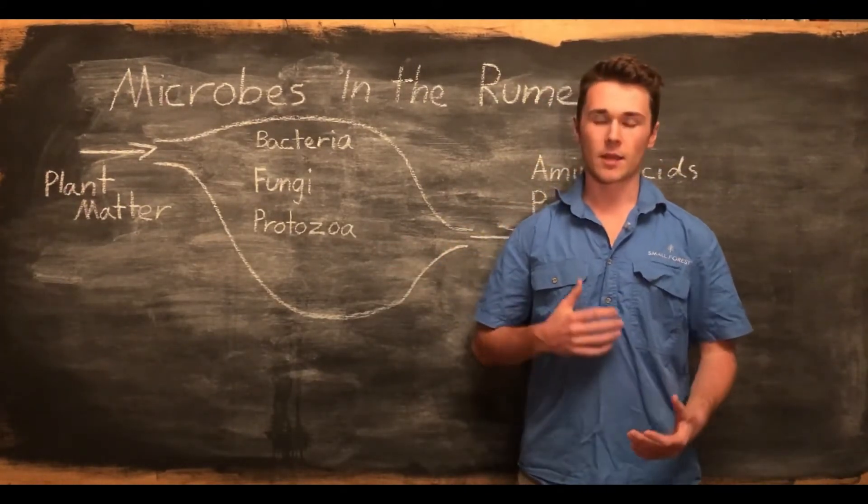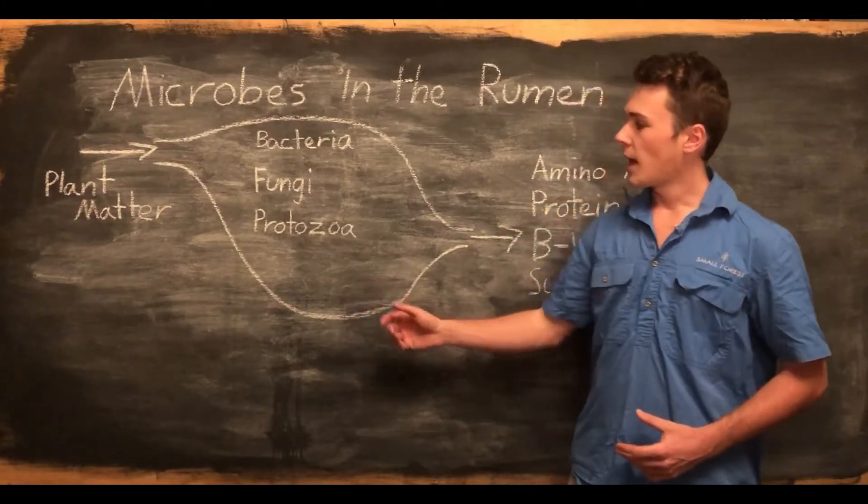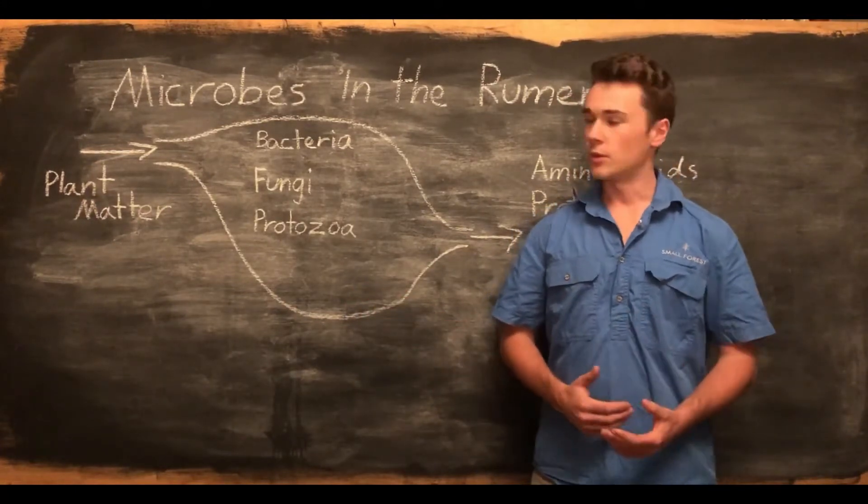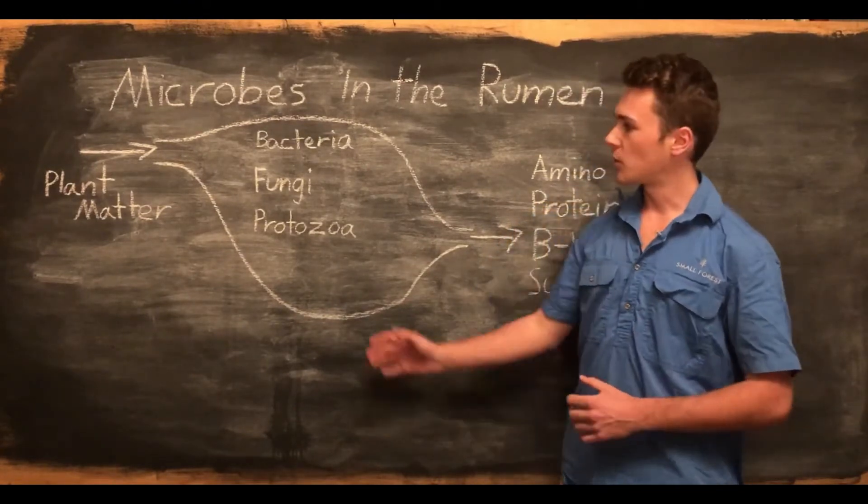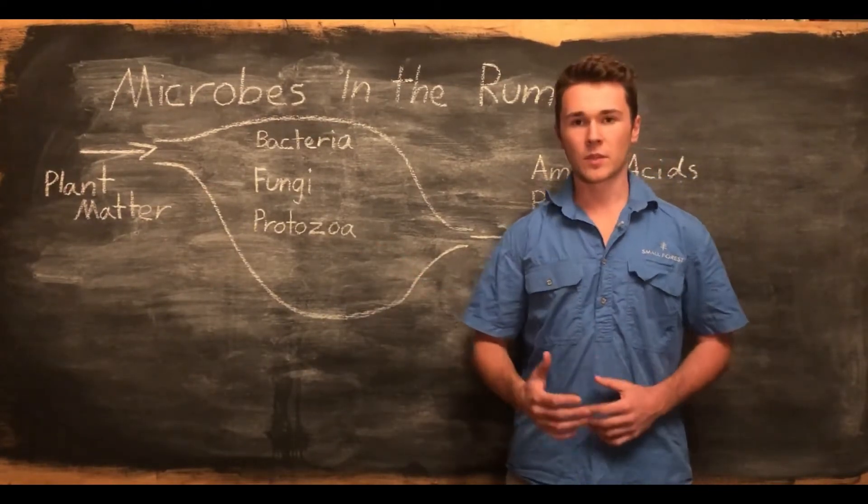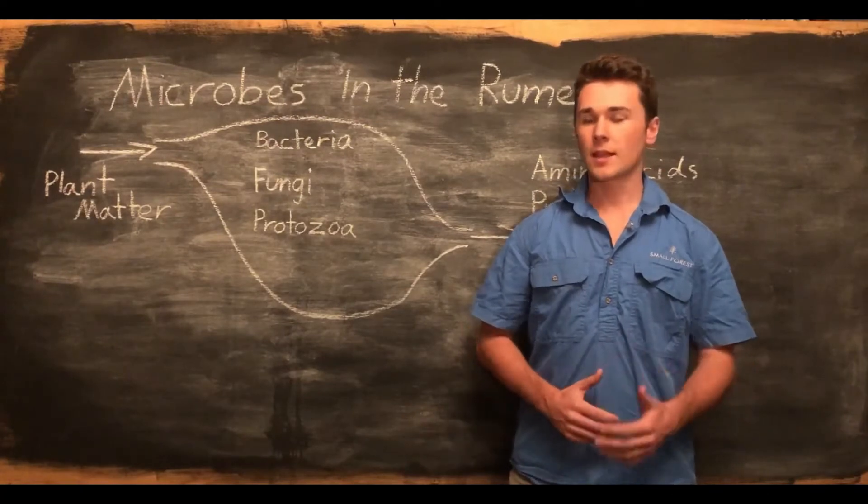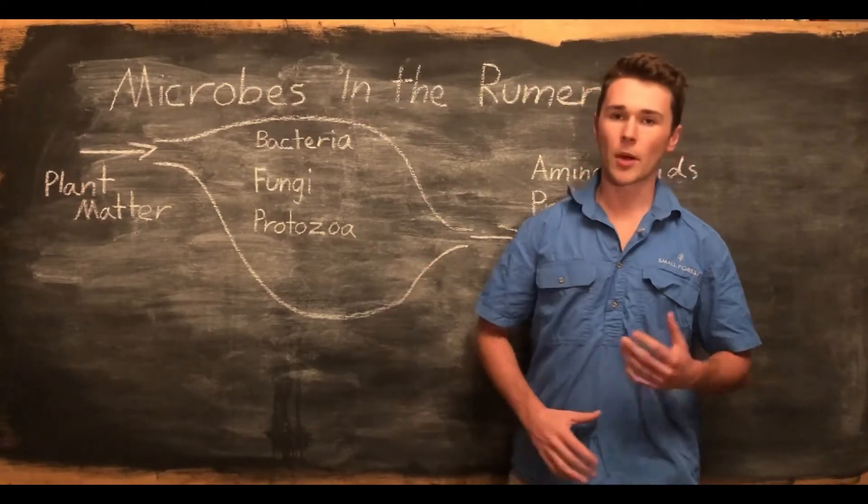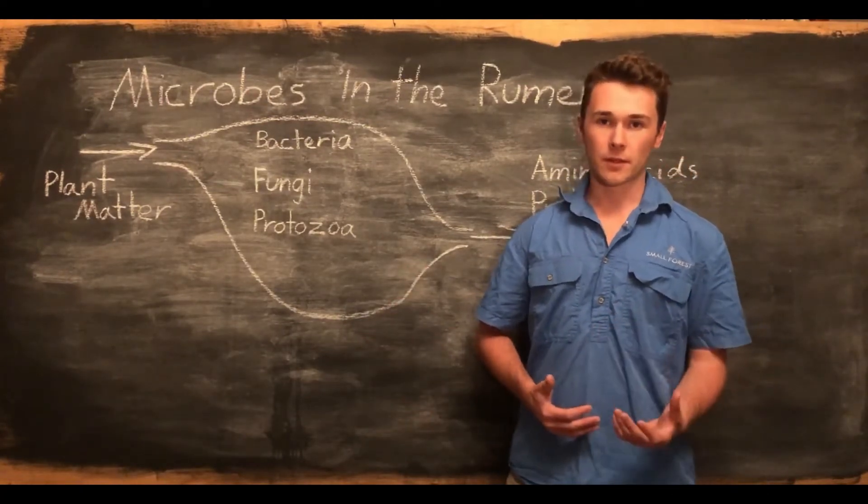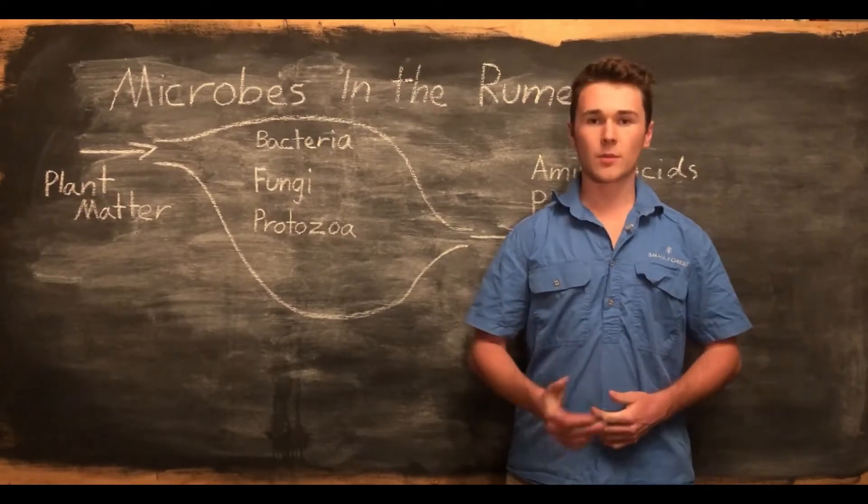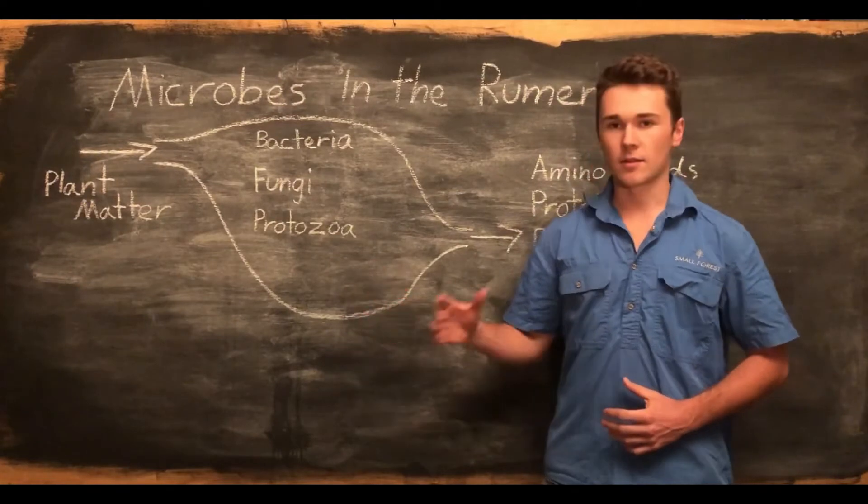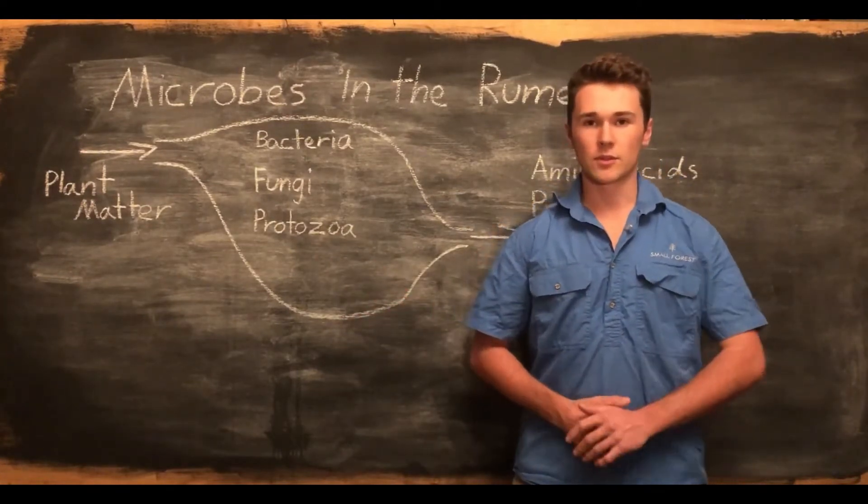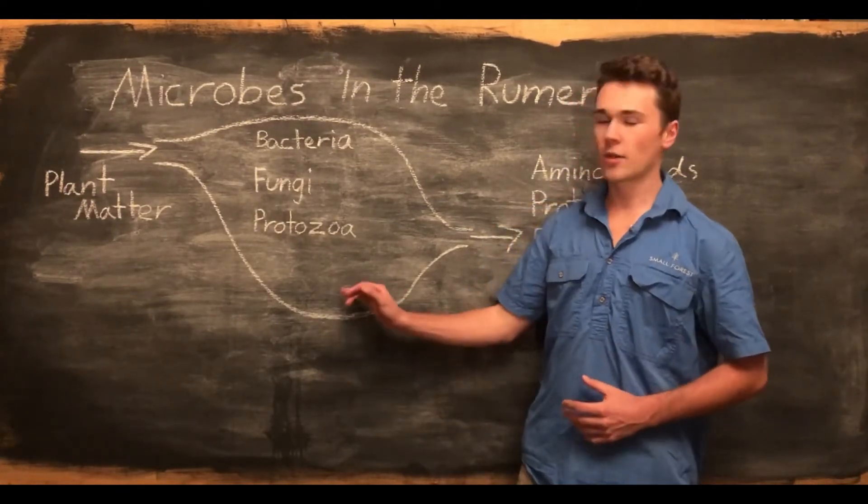The microbes receive a place to live inside the rumen and they also receive food as the animal eats. This relationship between the microbes and the animal is called a symbiotic relationship, where both organisms benefit from the interaction. The animal receives the ability to break down plant matter and the microbes can live there and get as much food as they want.